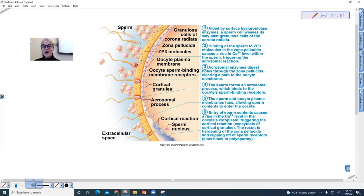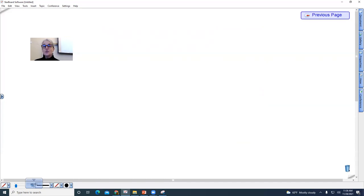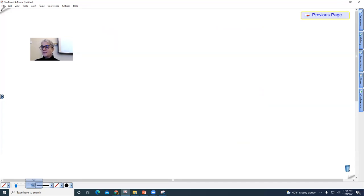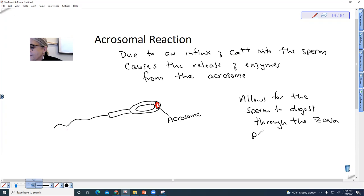And so this is a diagram that shows that process. The enzymes here are shown in red. So these enzymes allow the sperm to digest through the zona pellucida. So this allows for the sperm to digest through the zona pellucida to get to receptors on the surface of the oocyte.